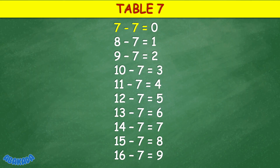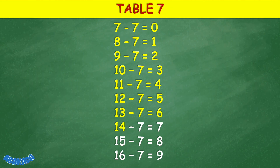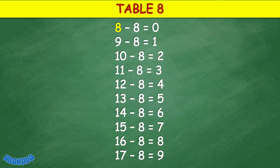Table 7: 7 minus 7 equals 0, 8 minus 7 equals 1, 9 minus 7 equals 2, 10 minus 7 equals 3, 4 minus 7 equals 4, 12 minus 7 equals 5, 13 minus 7 equals 6, 14 minus 7 equals 7, 15 minus 7 equals 8, 16 minus 7 equals 9.